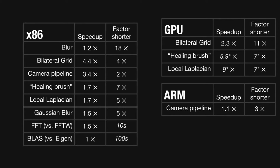These days we even have public pure Halide implementations of some highly optimized libraries. In a very small amount of code — on the order of tens to hundreds of lines — you can write a faster Gaussian blur than OpenCV or IPP, a faster FFT than FFTW, or a faster matrix multiply than Eigen. You can find all of these in our open source repository, and the live coding examples from this tutorial actually include a simplified version of the blur.